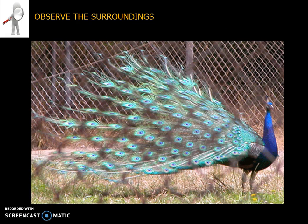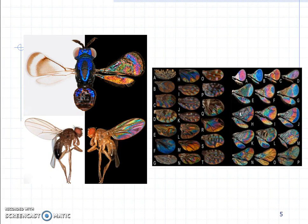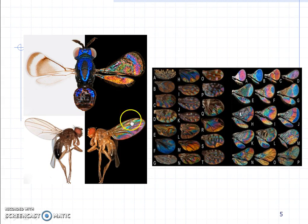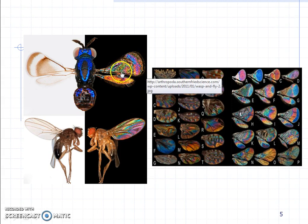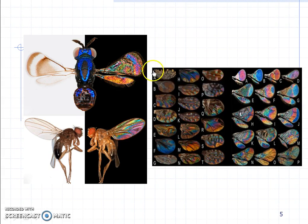Let us look at observations from our surroundings. First, look at this peacock feather — you can observe all the different colors on it. The phenomenon here is also interference. Now look at this butterfly. You can see different colors because there is a thin film formed on its surface, and different colors can be observed using the interference technique.